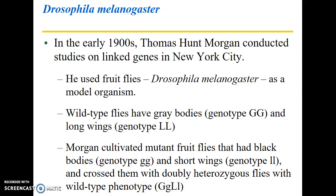Wild type refers to animals with the most common phenotype in nature. A wild type fly has a gray body (genotype GG) and long wings (genotype LL). Morgan cultivated mutant fruit flies — not dramatically altered, but variations on the wild type: a black body (genotype gg) and short wings that don't extend past the abdomen (genotype ll). He then crossed those mutant flies with doubly heterozygous flies showing the wild type phenotype.